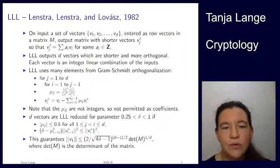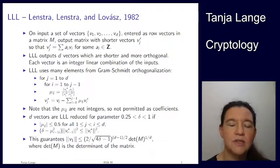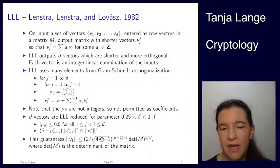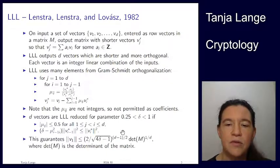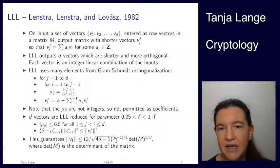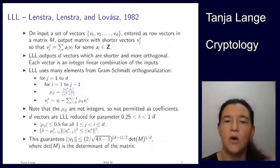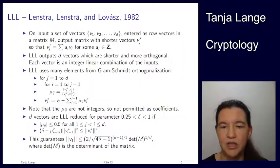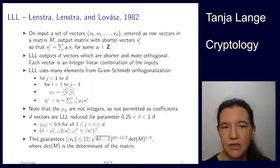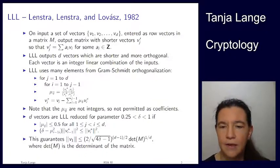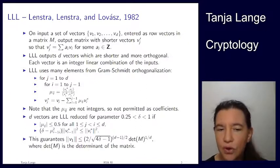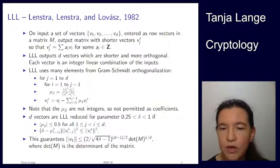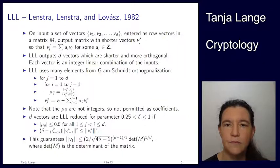The guarantee LLL gives is that the first output vector is relatively short — shortness depending on delta, the size of the matrix (a d×d matrix since we have d vectors in d-dimensional space), and the determinant of the matrix. It's the d-th root of the determinant that comes in.